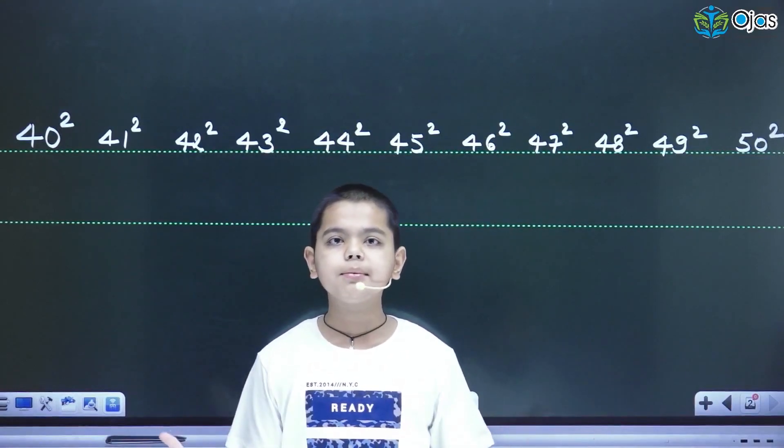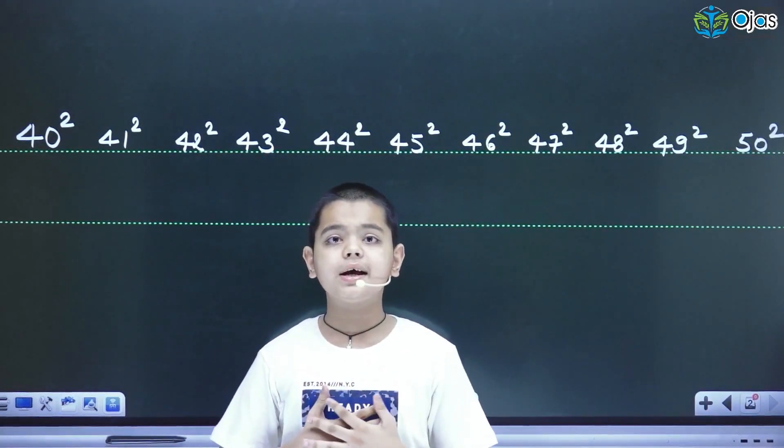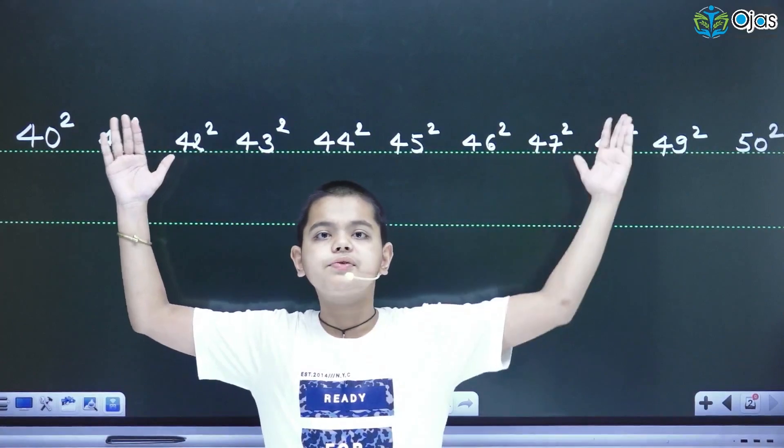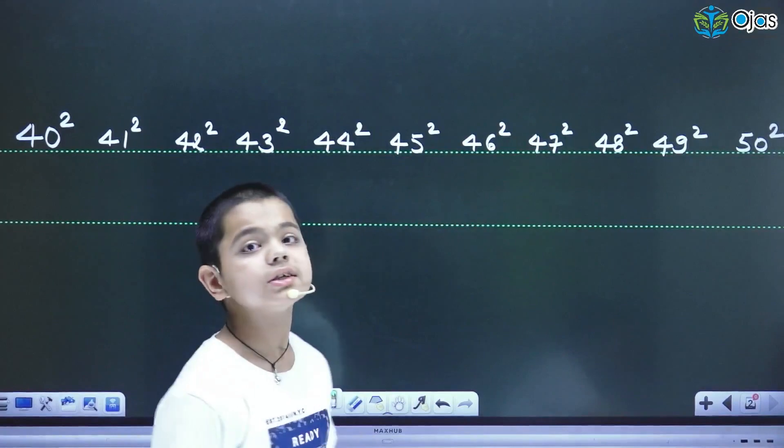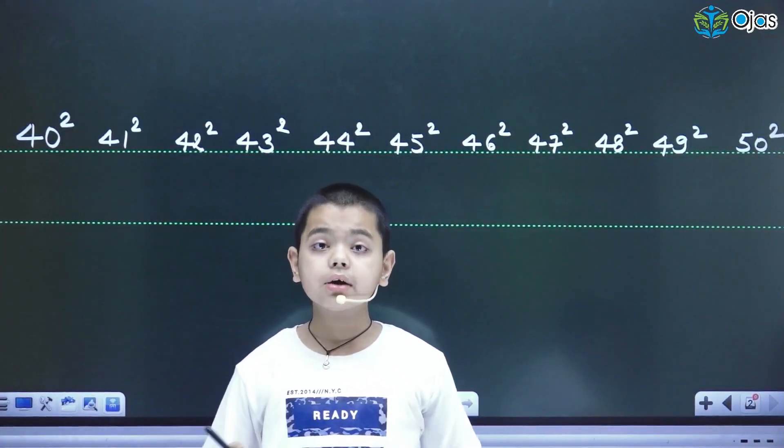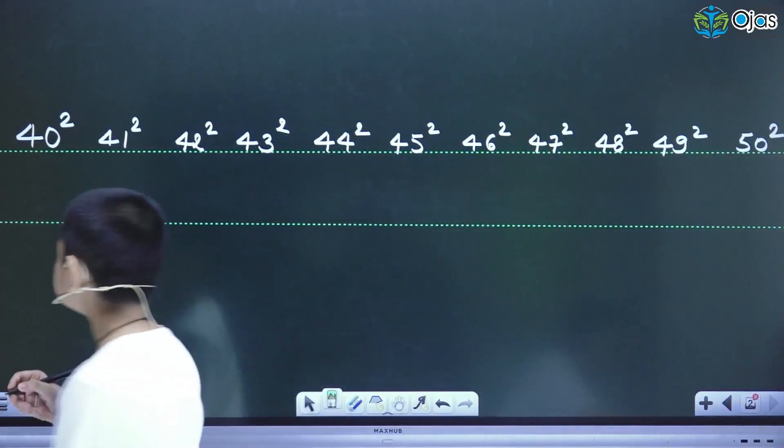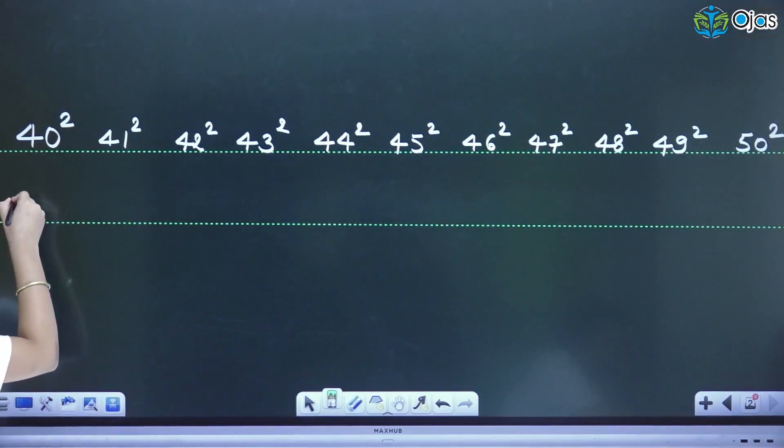Hello everyone, my name is Ojasneel and I welcome you in this class. Today we will learn the square between 40 and 50. As you know, every number is having 4, so the square of 4 is 16. I am writing here 16.